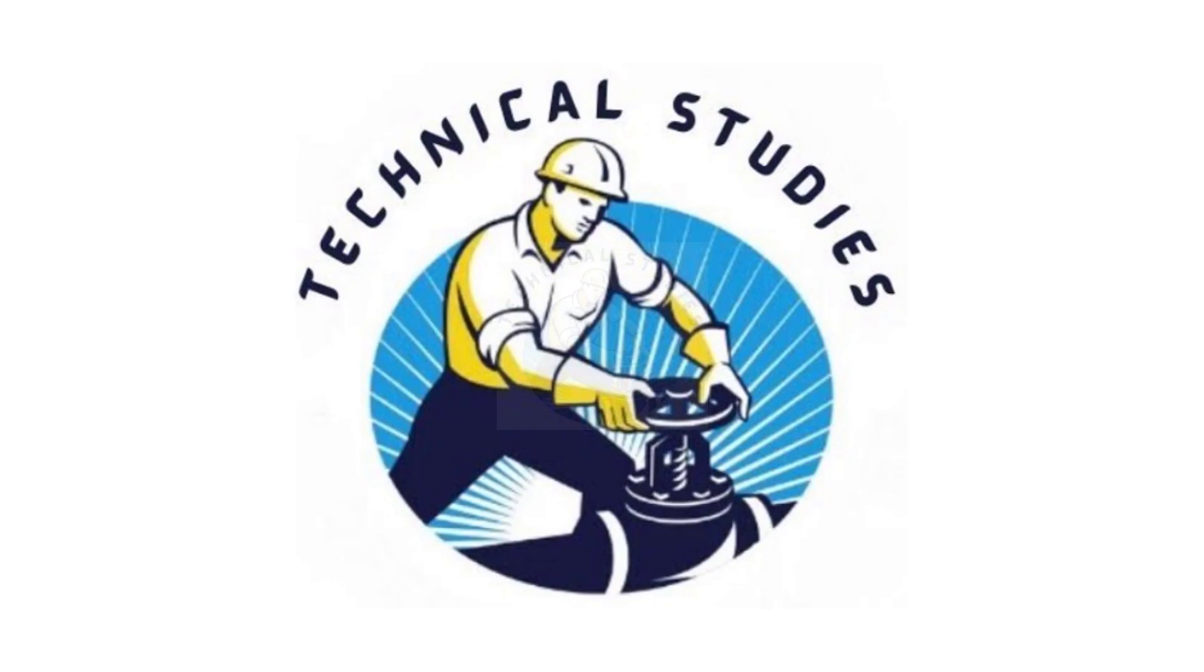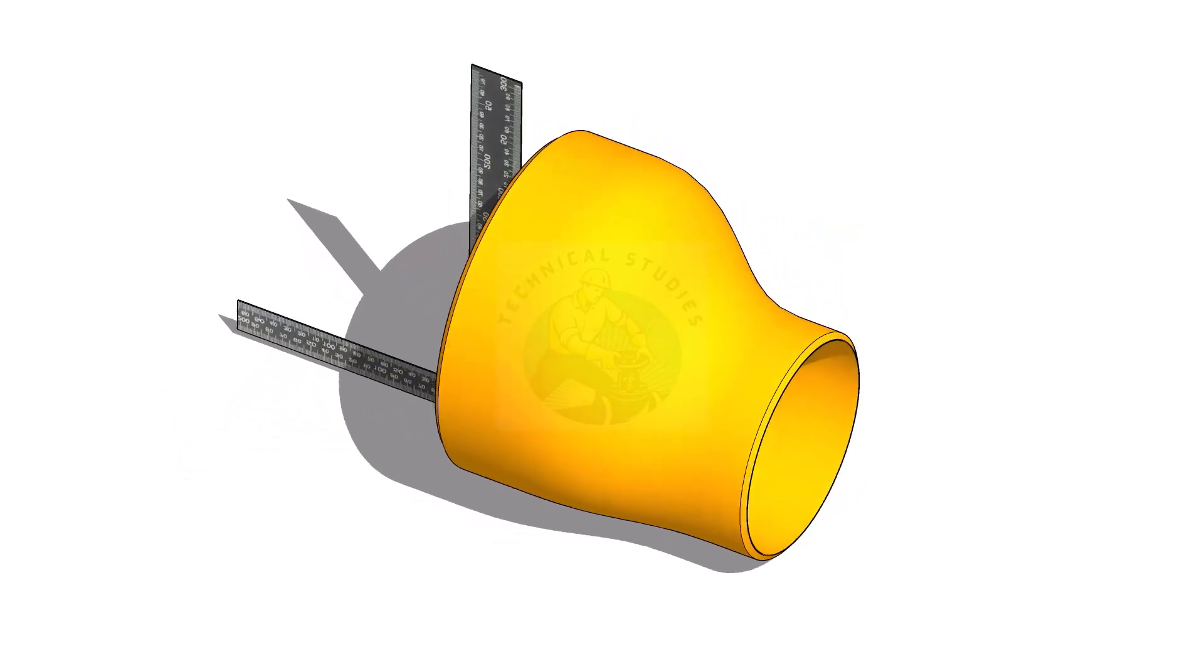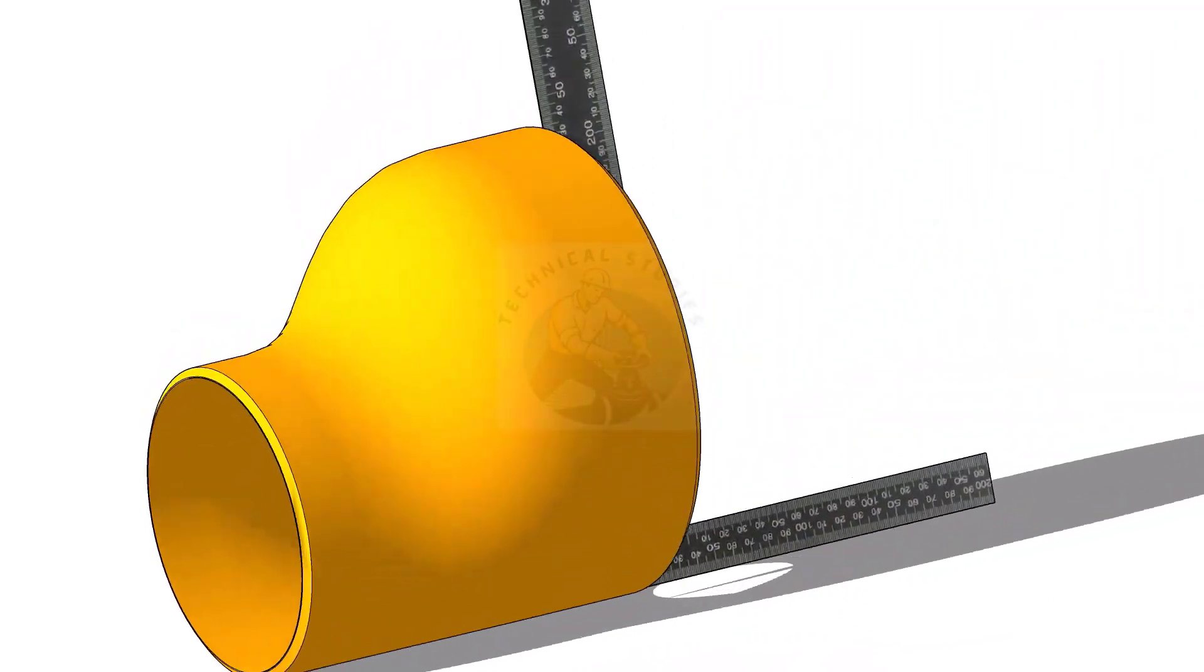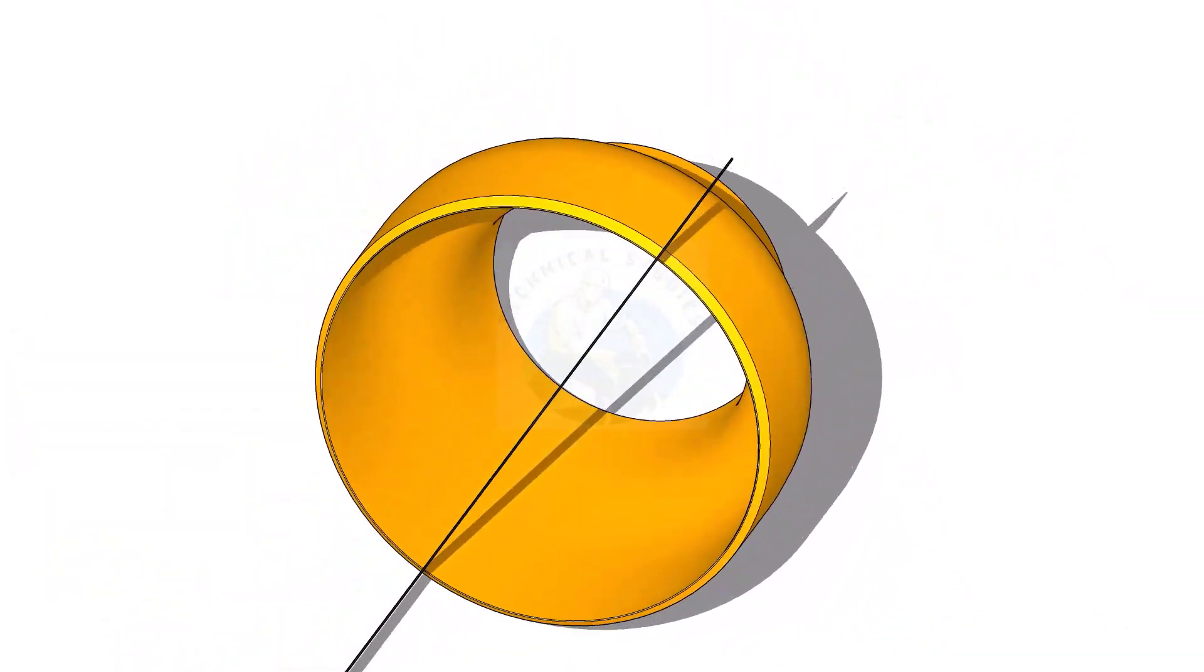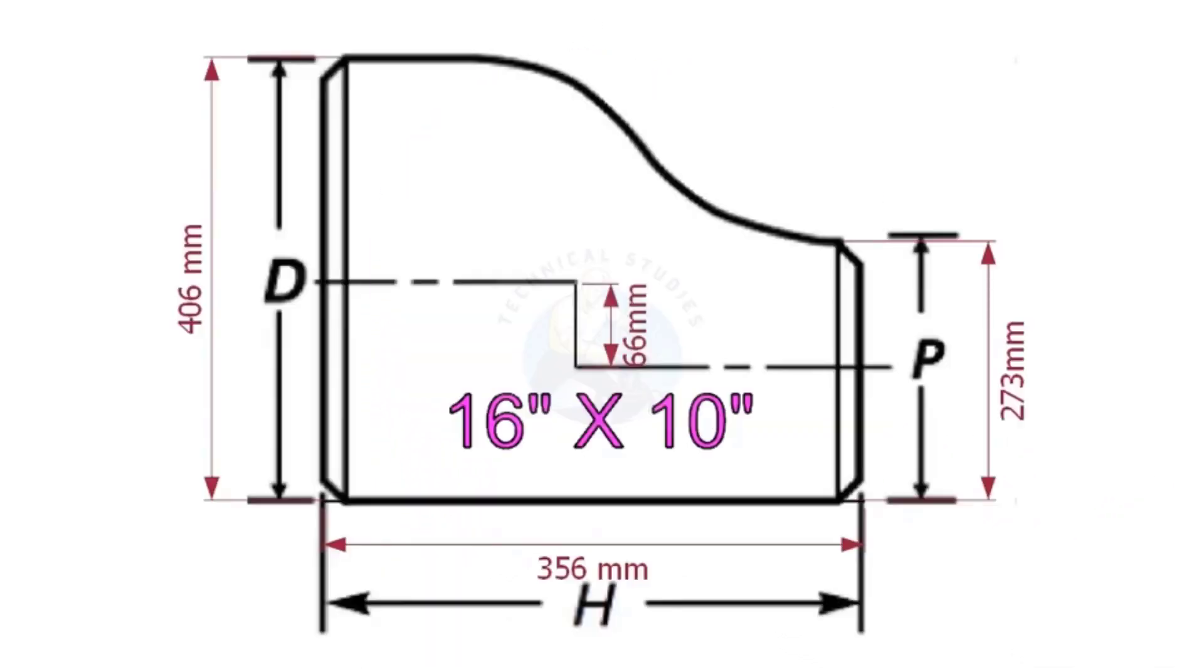An eccentric reducer is a fitting used in piping systems between two pipes of different diameters. The same fitting can be used in reverse as an eccentric increaser or expander. I've observed some fitters and fabricators having difficulty marking the center line of an eccentric reducer. Today I will show you how to mark the center lines of an eccentric reducer in a step-by-step procedure.